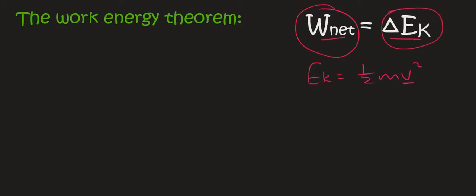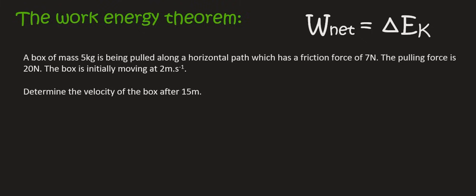So here's a basic example just to illustrate the process. Here we have a box of mass 5 kilograms, which is being pulled along a horizontal path, which has a frictional force of 7 newtons. The pulling force is 20 newtons. The box is initially moving at 2 meters per second. Determine the velocity of the box after 15 meters.